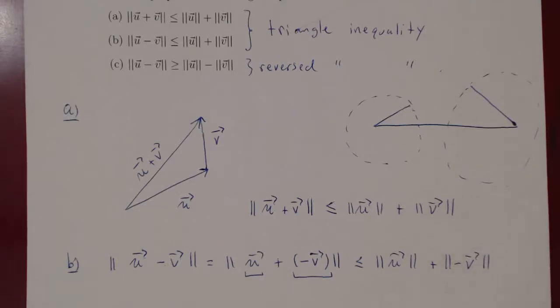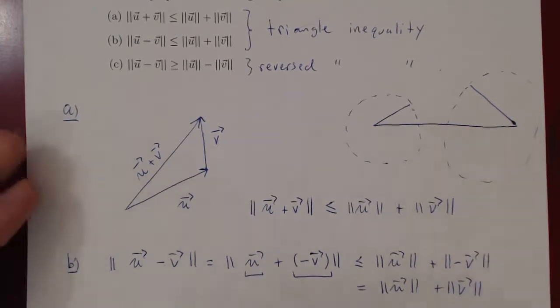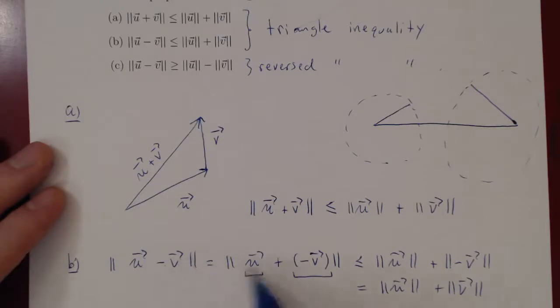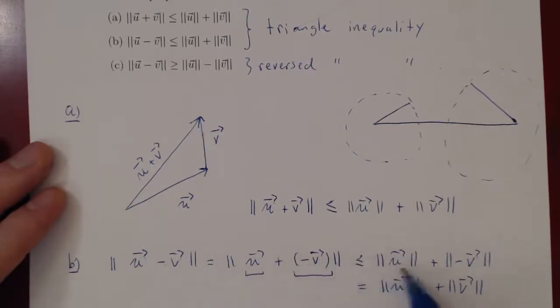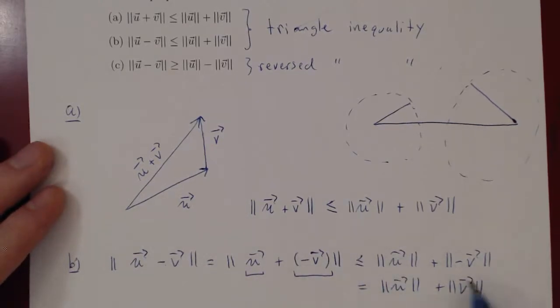But the norm of negative v, that's the same as the norm of v, right? Negative v is the vector whose length is the same as v, but whose direction is opposite. Well, the length is the same, therefore, this is just norm of u plus the norm of v. And then we have result b. The norm of u minus v will never exceed the norm of u plus norm of v.